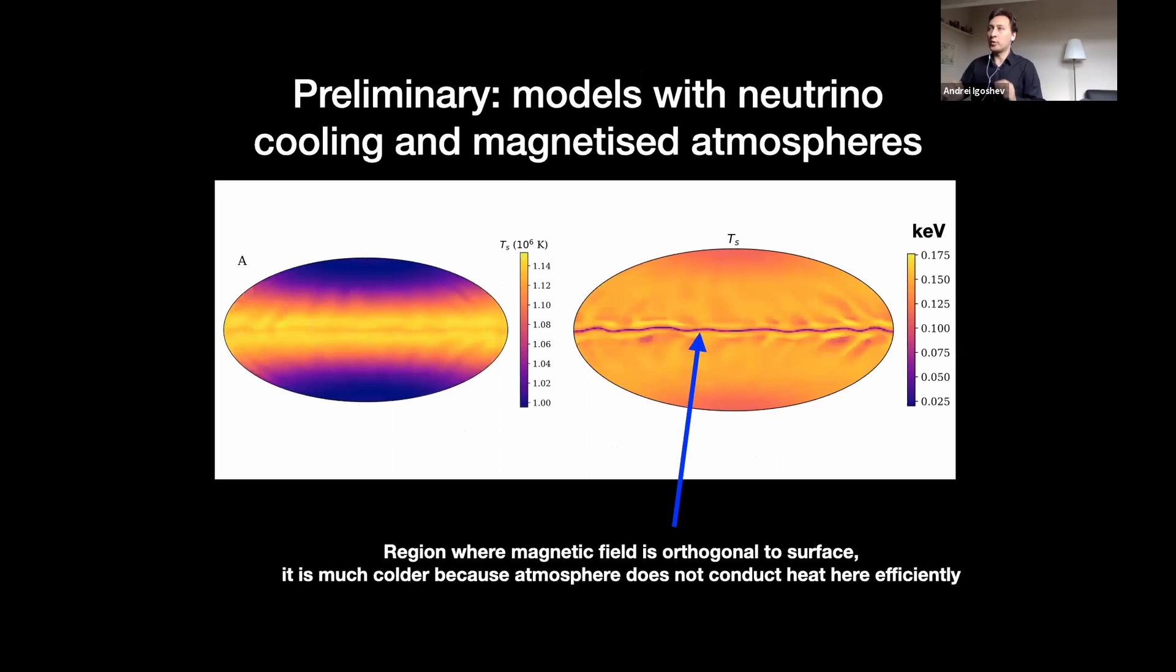In our more modern models where we included the magnetized atmosphere, the main difference is essentially appearance of extremely cold region along the magnetic equator, because again, due to the magnetic field which is parallel towards the surface, heat has a lot of problems transporting in this direction.